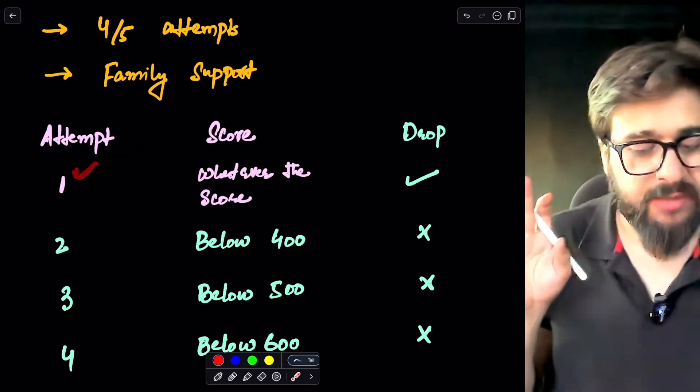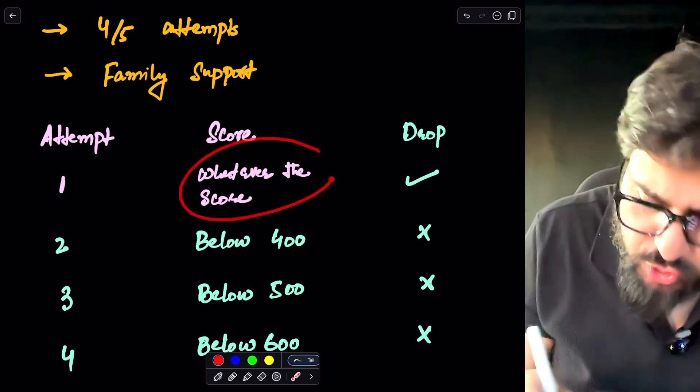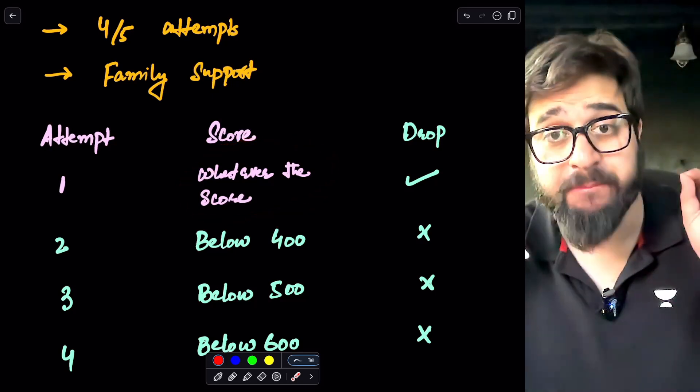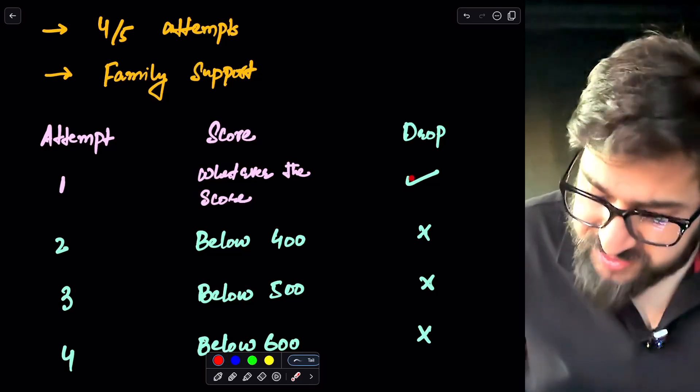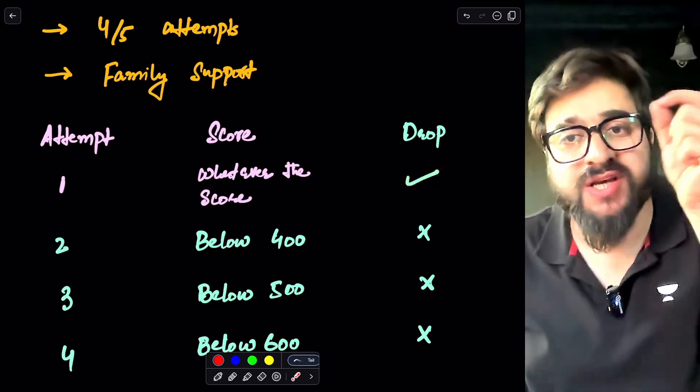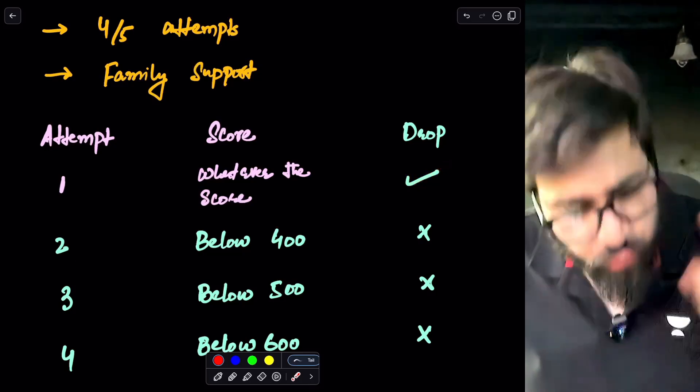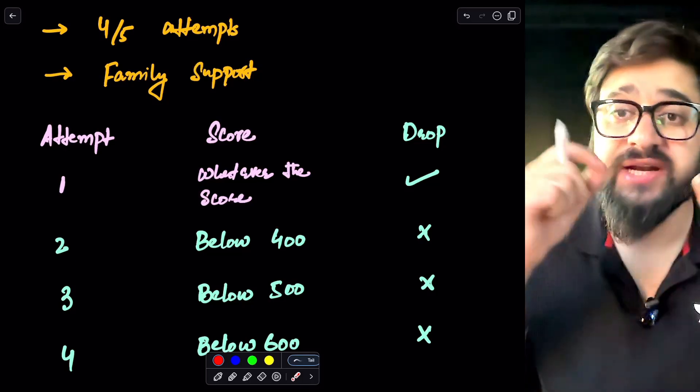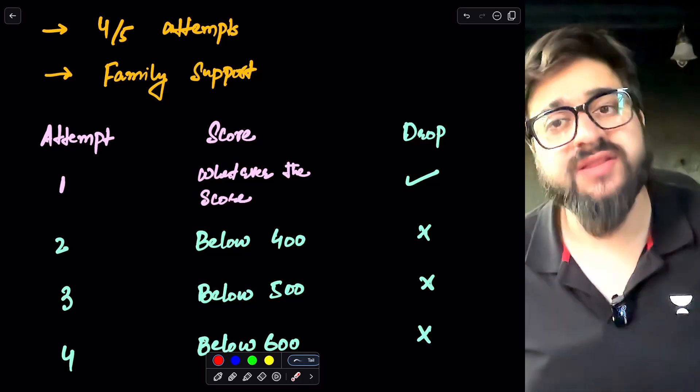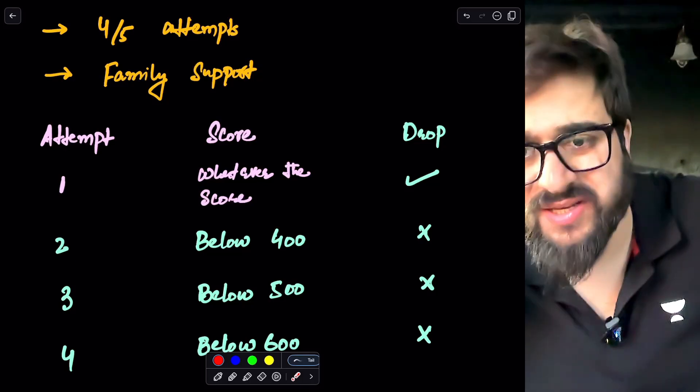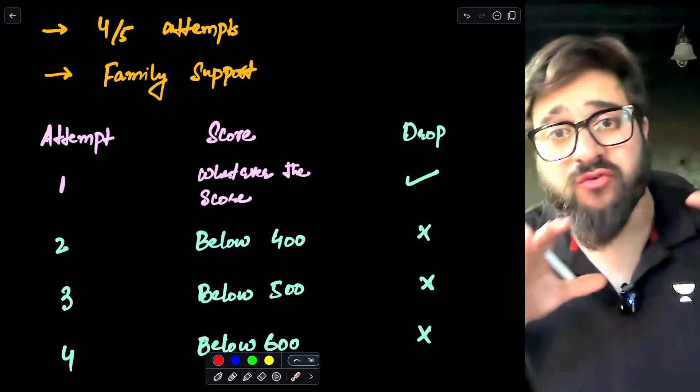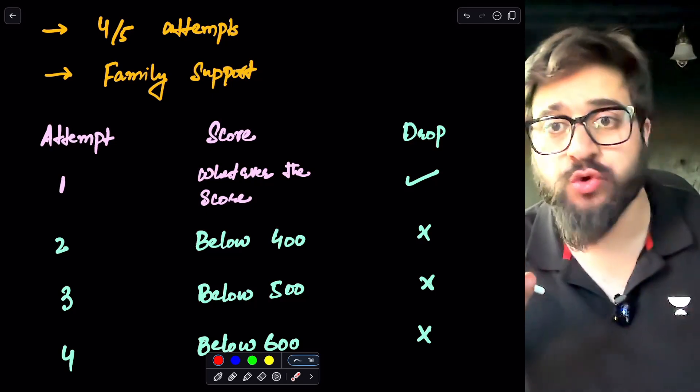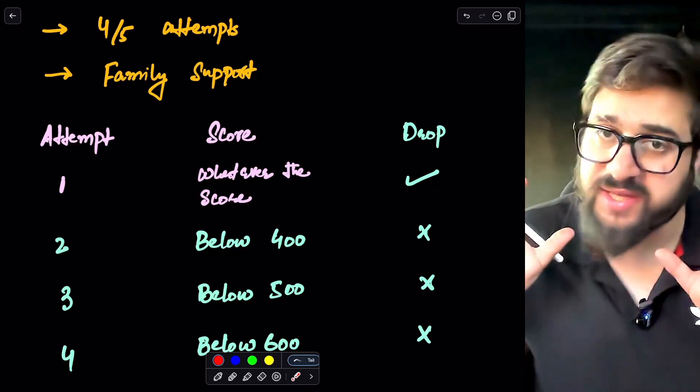If you have given one attempt, whatever the score you were having guys, this is very important. Be it 200, be it 100, be it 300. So I suggest you guys, you should take a drop because you can give your 100%. You can prepare from the basics and you can take the drop and you can enter the medical college. There are very high chances because I have personally seen there are a lot of students who have done this before and who were basically getting the very less score previously but after taking the drop, they got a good.